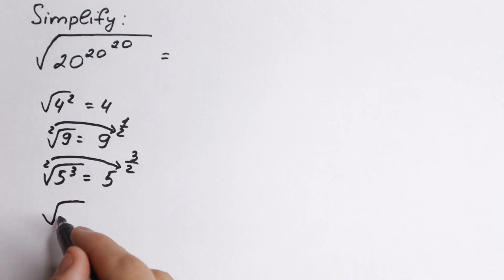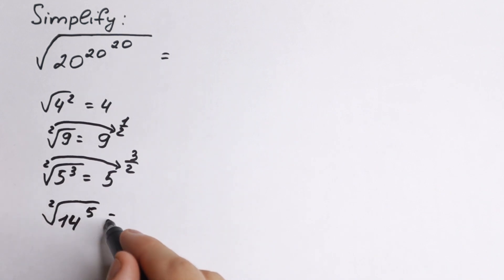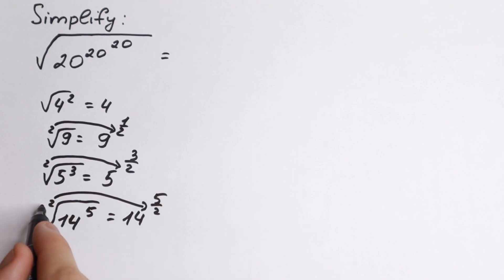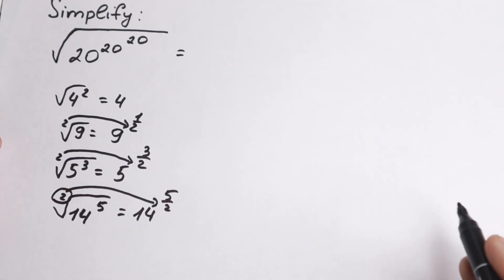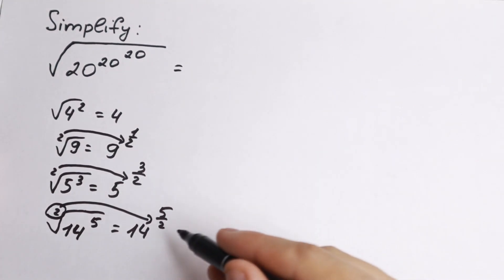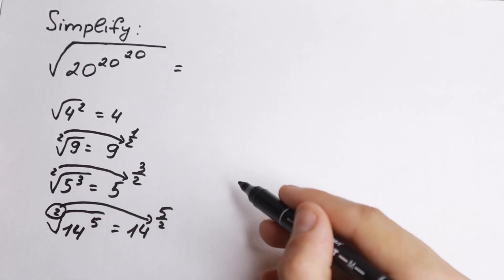For example, we have like 17 or 14 to the power 5, and we have square root. So this is equal to 14 to the power 5 over 2. So I hope you see this really interesting pattern right now, that this power of our square root divides our power of this number inside. So this is like the main difficulty. So it divides our power of this number.